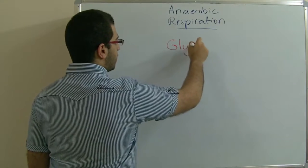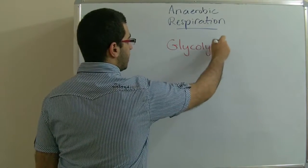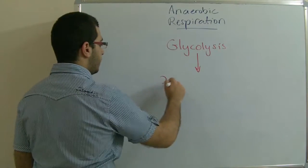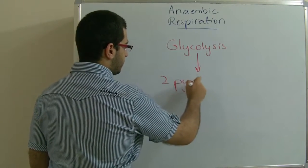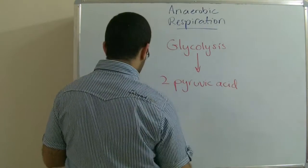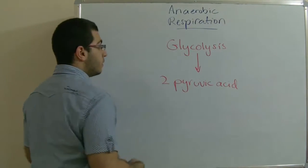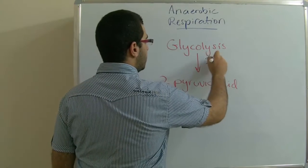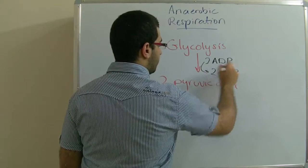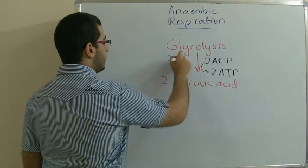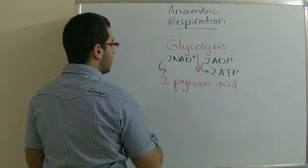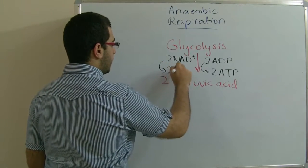They begin with the process of glycolysis, where the glucose molecule changes into two pyruvic acid molecules. And during that, we have two ADP molecules oxidized into two ATP and two NAD+ reduced into two NADH.